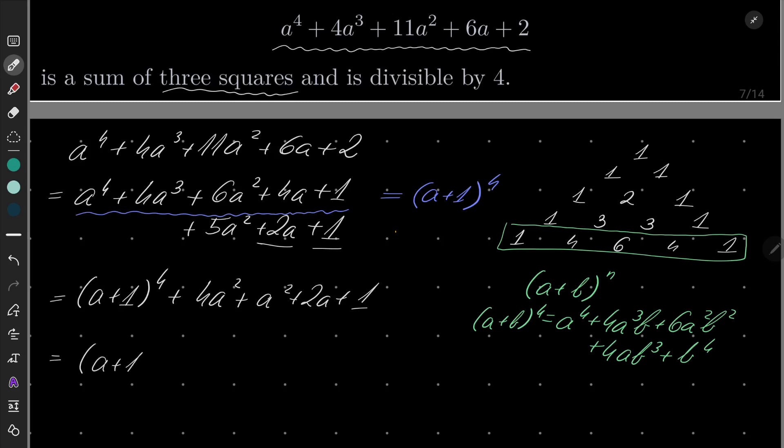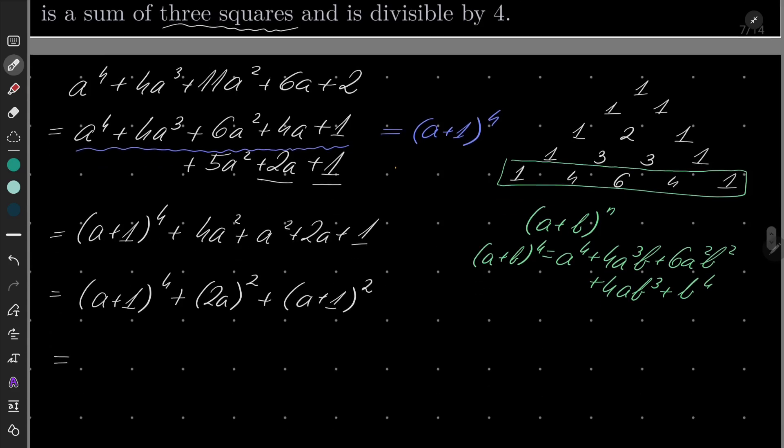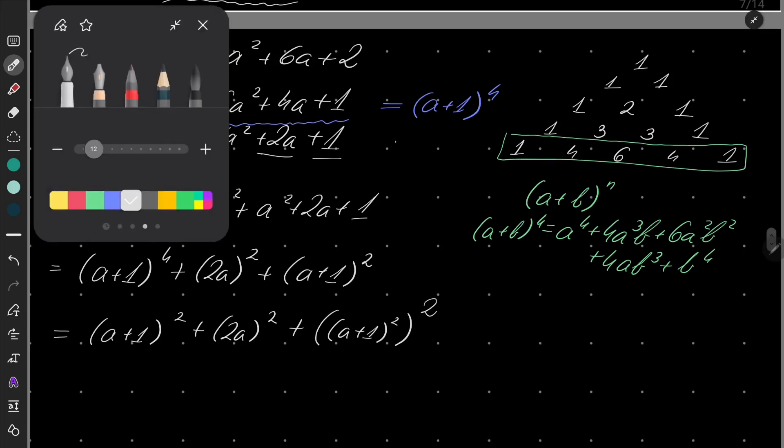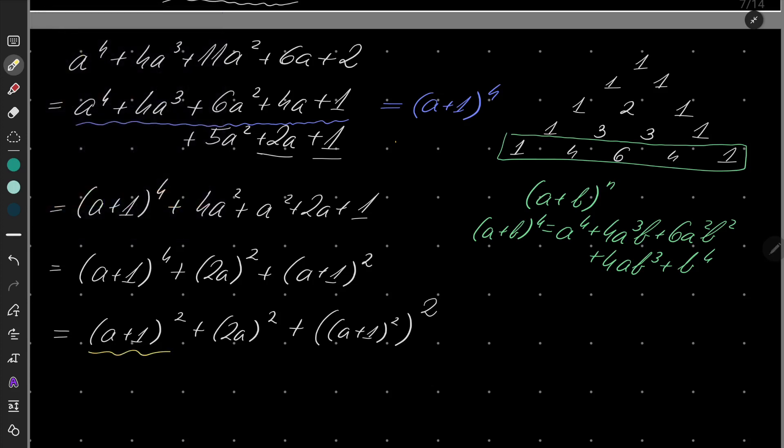Well, 4a^2 is (2a)^2 and this last part is just (a+1)^2. And maybe write it in this form. It's (a+1)^2 + (2a)^2 + (a+1)^2 squared. And now we see that we have in fact produced 3 squares.